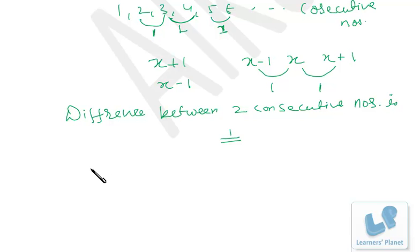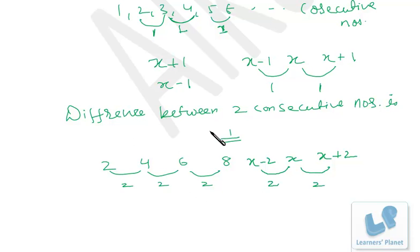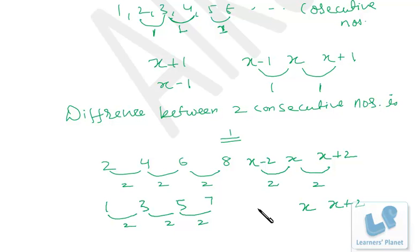For two consecutive even numbers — like 2, 4, 6, 8 — the difference is 2. So if one number is x, the other is x + 2 or x − 2. Similarly, for consecutive odd numbers like 1, 3, 5, 7, the difference is also 2. So consecutive odd numbers follow the same pattern: x − 2, x, x + 2.